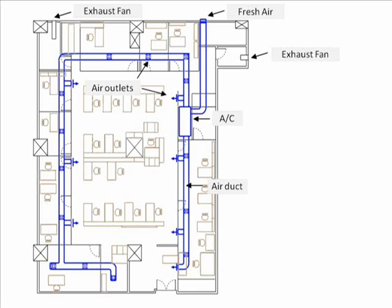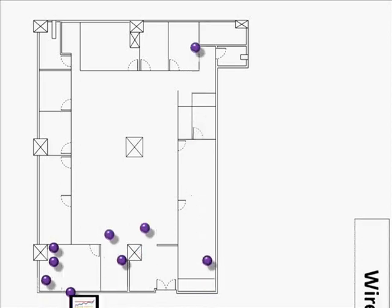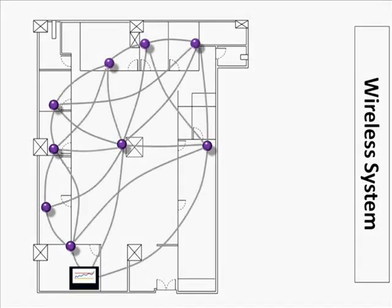Now let's take a quick look at how we implement the profiling of indoor air quality. This is a standard office, 4,000 square feet with one single air conditioning system. If you want to test the air quality, it's very simple — a master unit here, and then you can put wireless sensor units at different sampling points.